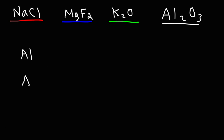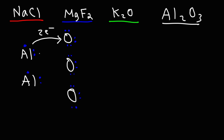Now in this example we have two aluminum atoms and three oxygen atoms. Each aluminum atom has three valence electrons, and each oxygen atom has six valence electrons. Each oxygen atom wants to have eight valence electrons. So this aluminum will give the first oxygen atom two electrons, and the third one is going to go to the middle oxygen. The second aluminum is going to give one electron to the middle oxygen and then two to the one on the bottom.